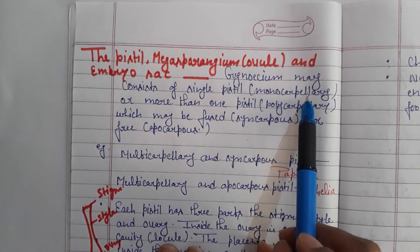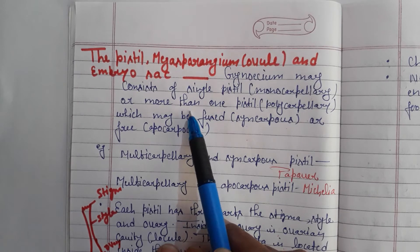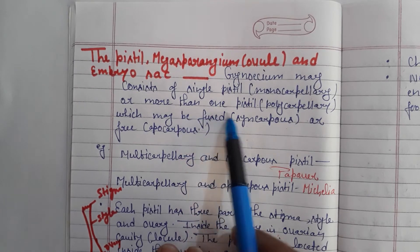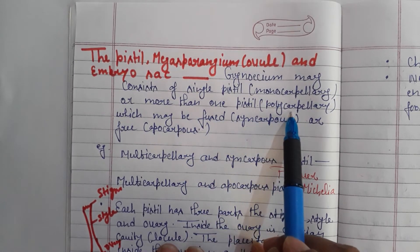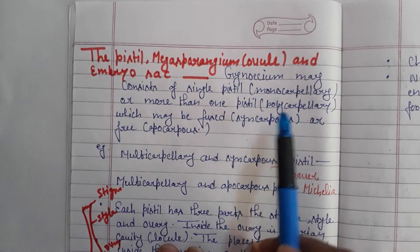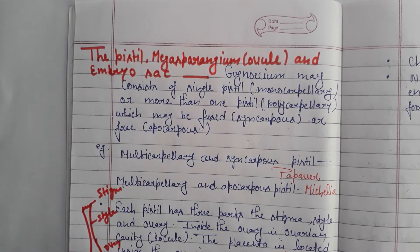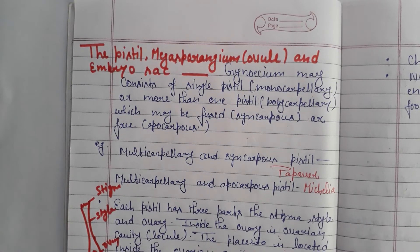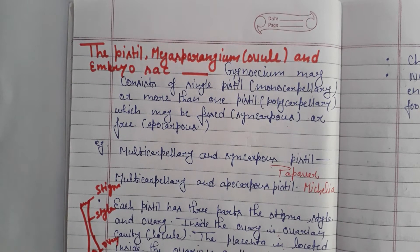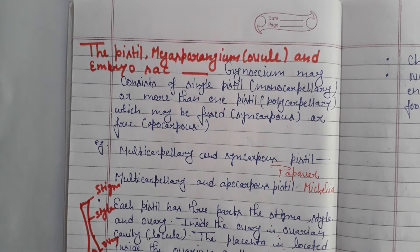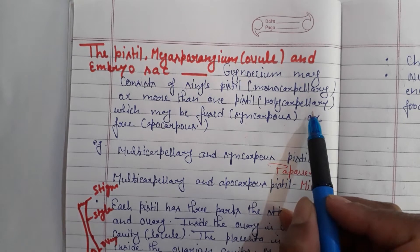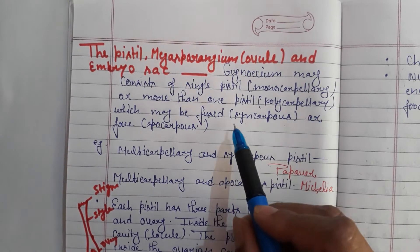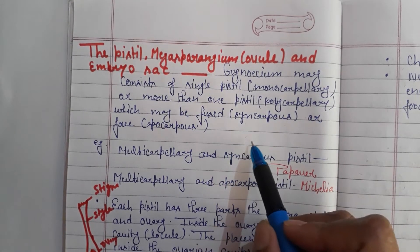One carpel is monocarpillary. If there is more than one carpel, it is called polycarpillary. If the carpels are fused or connected with each other, it is still called polycarpillary syncarpous.